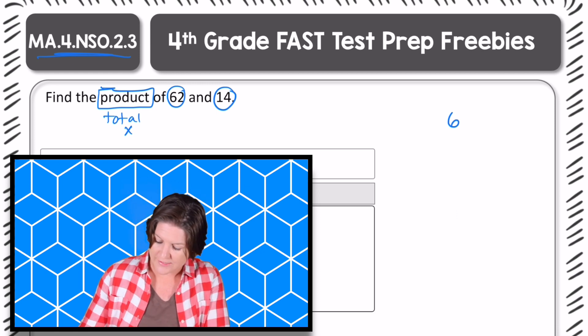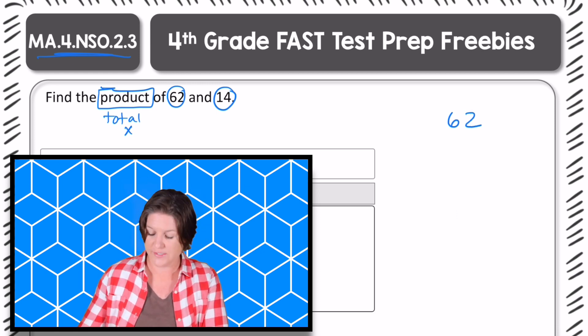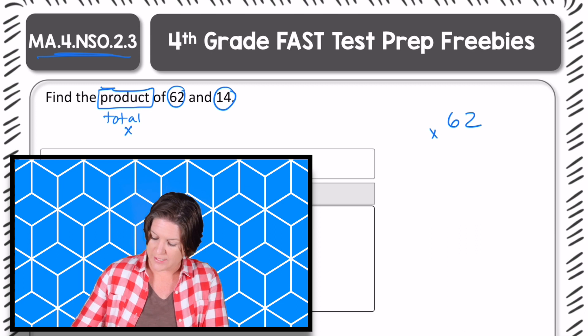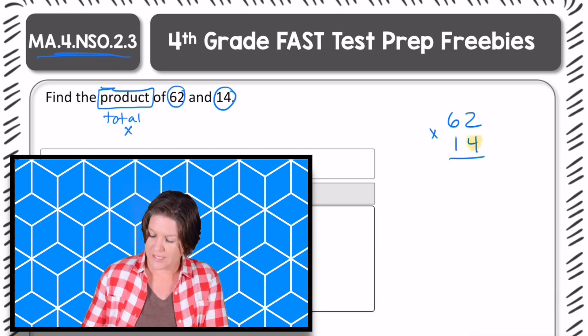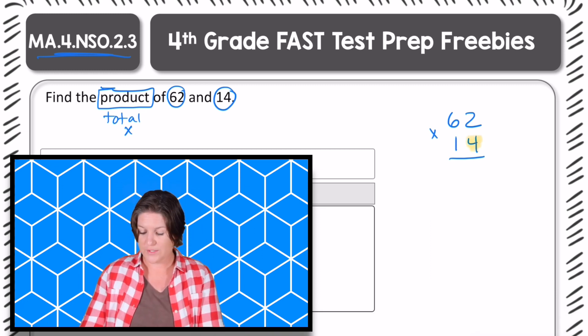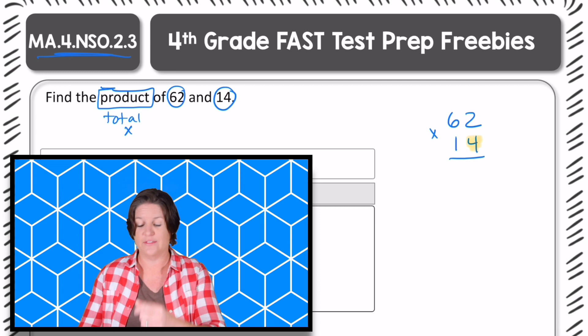Generally, when I'm using the standard algorithm, I'll place the larger number on top, which is 62, and multiplying that by 14. Okay, so the first step is to multiply the digit four in the ones place times the 60 and the two.